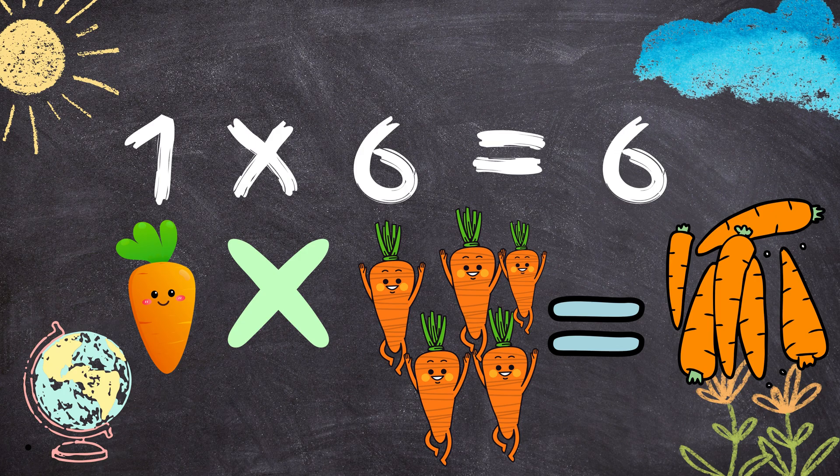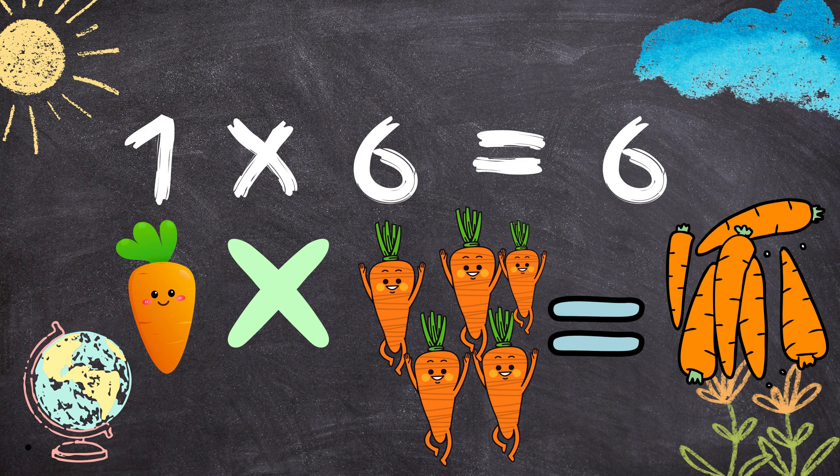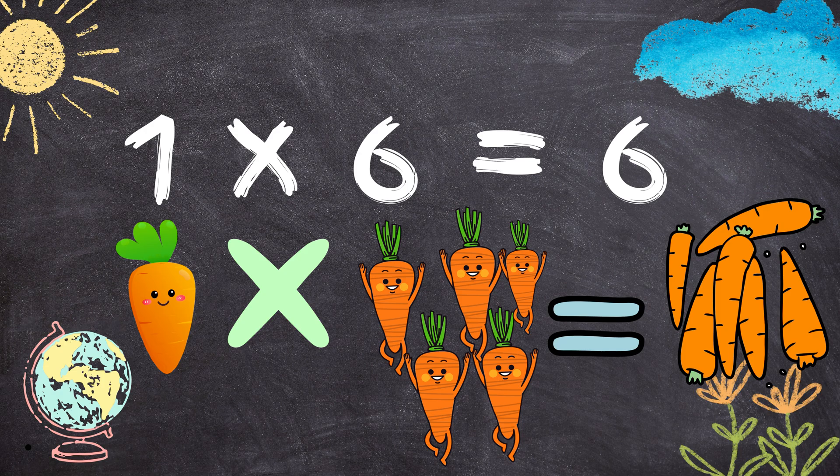1 times 6 is 6. 1 carrot multiplied by 6 carrots will equal 1, 2, 3, 4, 5, 6 carrots.